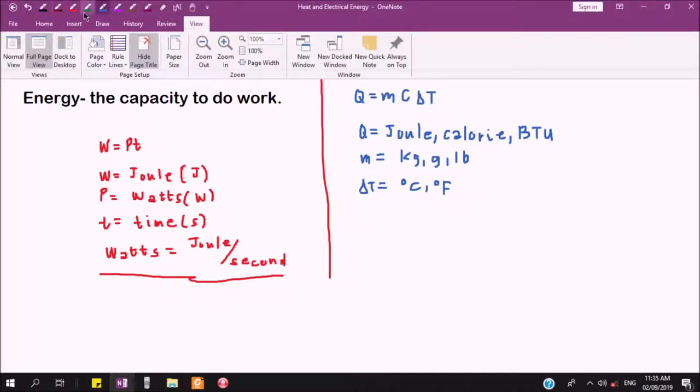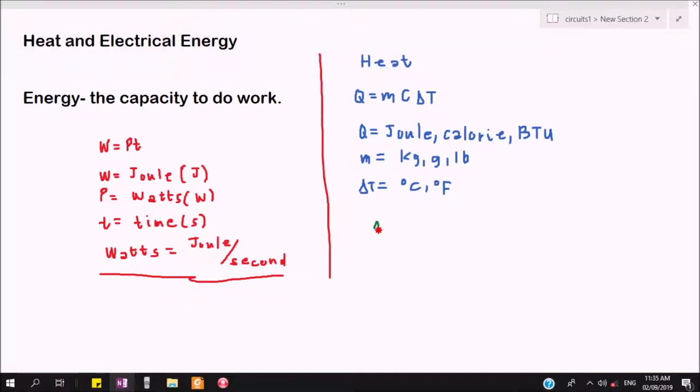One calorie is equivalent to 4.186 joule. Then one BTU, the meaning for BTU is British thermal unit, one BTU is equal to 252 calories.